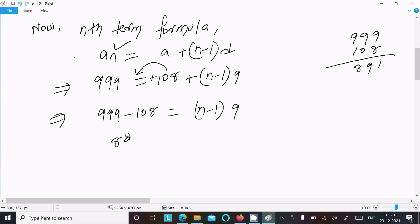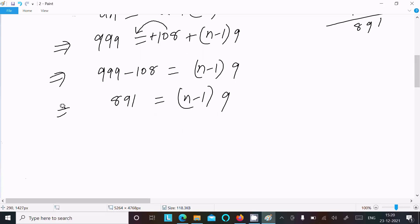891 equals (n-1) times 9. We can write n minus 1 equals 891 divided by 9. If you divide this, 9 times 99 equals 891.